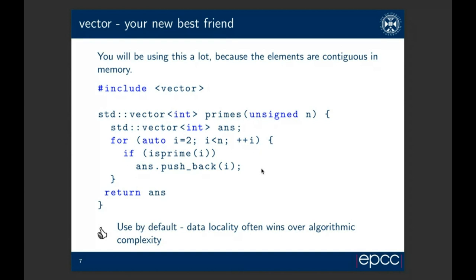Vector is basically going to be your best friend if you're doing anything numerical in C++. The elements are contiguous in memory, so if you iterate through a list of things the prefetcher on your modern CPU will pull these through as efficiently as possible — you're not jumping around in your address space. Even though push_back may allocate quite a lot, it's still what you should use by default because data locality usually wins over algorithmic complexity.